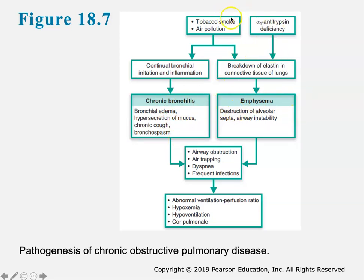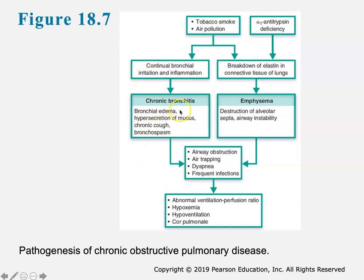Tobacco smoke and air pollution leads to breakdown of elastin in the connective tissue of the lungs. Chronic bronchitis involves bronchial edema, and basically a lot of what's happening here is what we see in asthma as well. The term bronchitis means inflammation of the bronchi - that inflammation can lead to edema, hypersecretion of mucus, a chronic cough, and bronchospasm. If you have enough inflammation constantly going on, you have breakdown of the connective tissue, which can lead to actual damage of respiratory structures - and that's what's happening in emphysema.